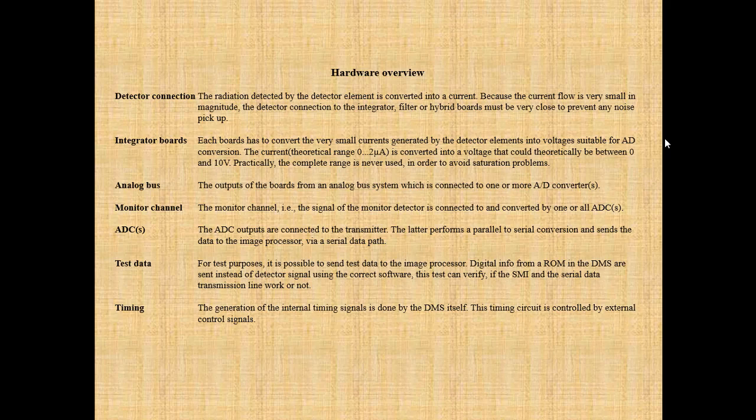Analog bus: the outputs of the integrator boards form an analog bus system connected to one or more A/D converters. Monitor channel: the signal of the monitor detector is connected to and converted by one or all ADCs. The ADC outputs are connected to the transmitter, which performs a parallel-to-serial conversion and sends the data to the image processor via a serial data path. For test purposes, it is possible to send test data — digital info from a ROM in the DMS — instead of detector signals. Using the correct software, this test can verify if the SMI and the serial data transmission line work correctly.